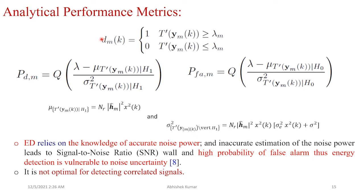The probability of detection is expressed as a Q-function: Q((λ - μ)/σ), where μ is the mean and σ² is the variance of the test statistic. Under H1, the variance is Nr·|h_m|²·x²_k·σ²_e·x² + σ²w, where σ²w is the noise variance. A key problem with energy detection is that the threshold highly depends on noise power; inaccurate noise power estimation leads to errors, and energy detection is also not optimal for detecting correlated signals.